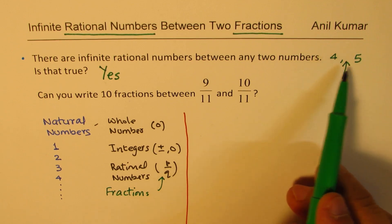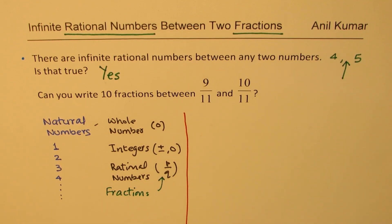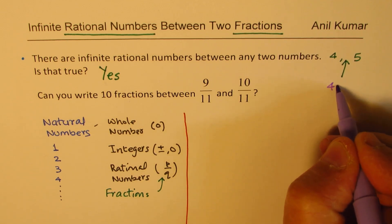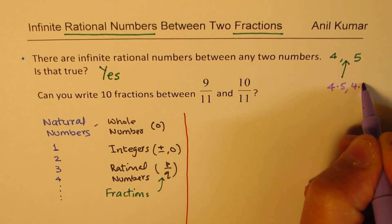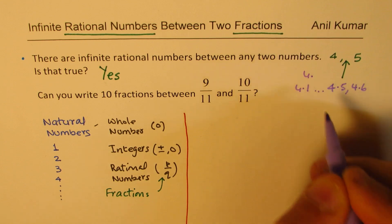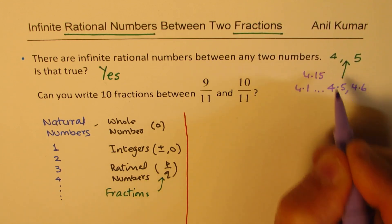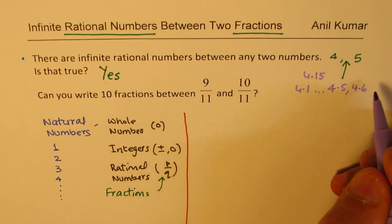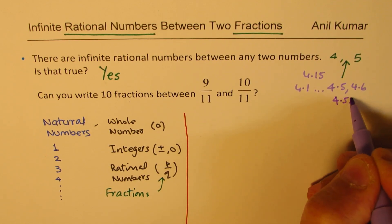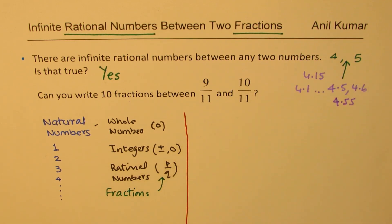And if you want to write, you can definitely write many numbers between them. So, you can actually pause the video, write these numbers which could be there between 4 and 5. Well, between 4 and 5, I could write 4.5, I could write 4.6, I can write 4.1, well I could also write 4.15, you get an idea. So, accordingly, I can actually go on and on and here I could add more numbers between 4.5 and 4.6 as 4.55. So, there are definitely infinite numbers between any two numbers.